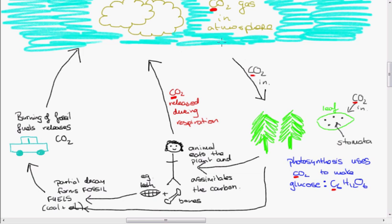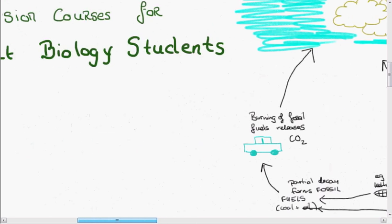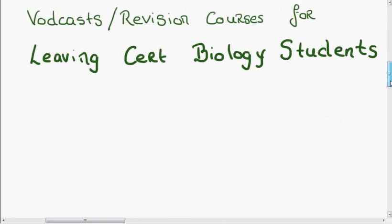So as you can see, the carbon never disappears. It's used in photosynthesis by plants, and if you want to hear more about photosynthesis, I have a vodcast on biolog.ie. Animals eat the plants. We release carbon dioxide during respiration. Fossil fuels are formed from plants and animals, and the burning of fossil fuels releases carbon dioxide once again back into the atmosphere. So that's it. That is the carbon cycle.